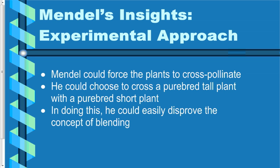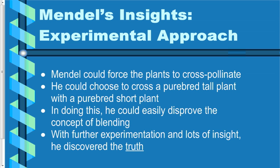In doing his experiments with pea plants, one thing Mendel could definitely prove was that blending was not the way that inheritance normally took place. When he bred tall plants with short plants, he did not get medium-height plants. As he worked through lots of these experiments, he discovered what we still realize today is the most common method of inheritance in any species that reproduces sexually.